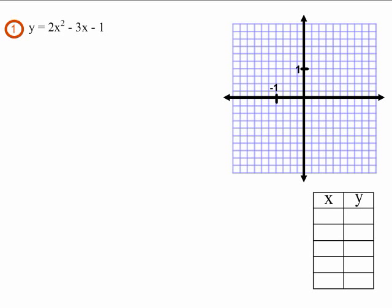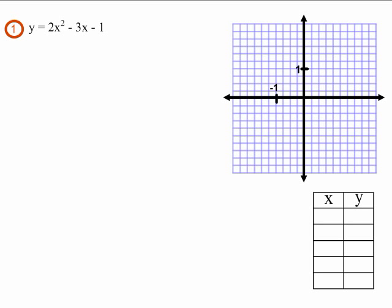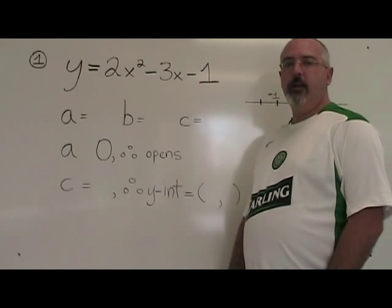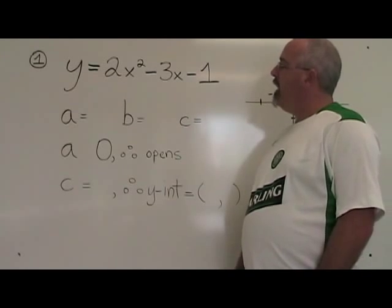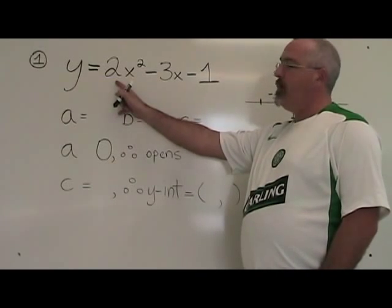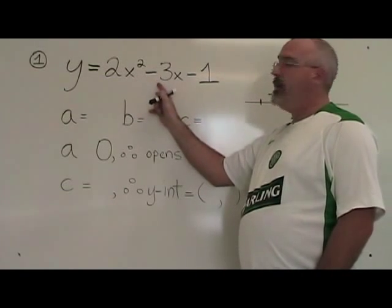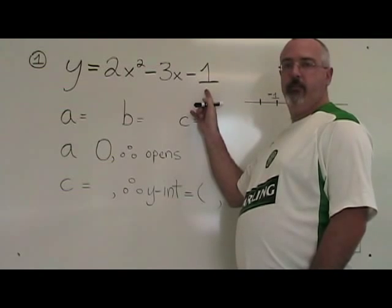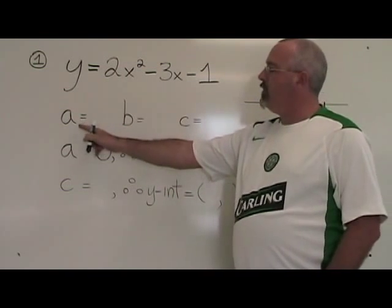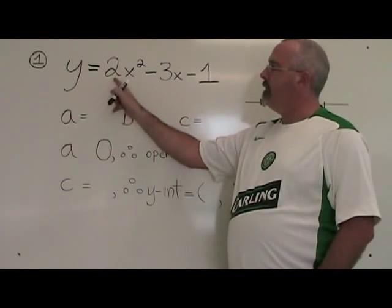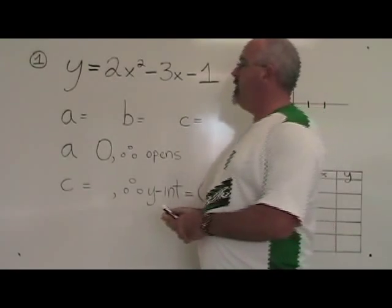My equation for example 1 is y equals 2x squared minus 3x minus 1. Let's begin to graph it. In example 1, a is the numerical coefficient of our first term, a equals 2.